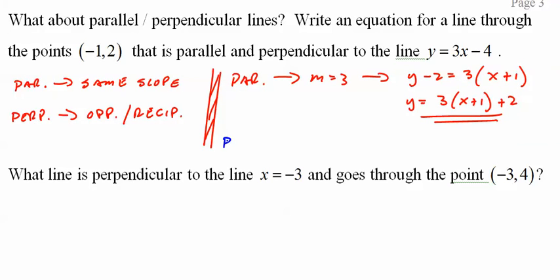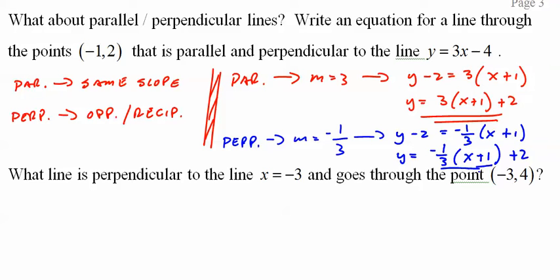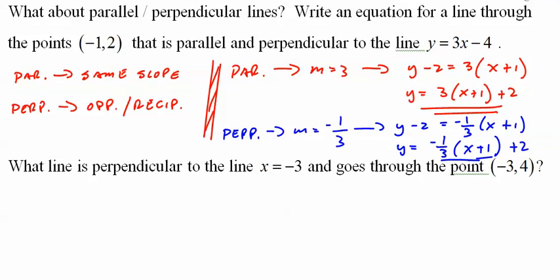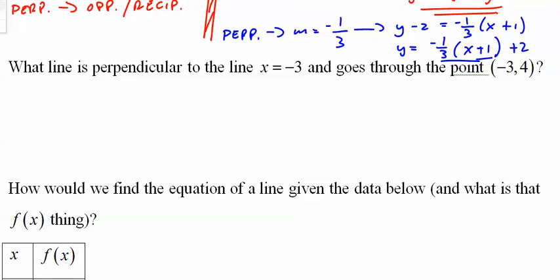And perpendicular: m equals negative 1/3. Y minus 2 equals negative 1/3 times x plus 1. Y equals negative 1/3 times x plus 1 plus 2. I see a lot of people instinctively turn that into slope-intercept. Unless it says slope-intercept, leave it. It's a lot easier to write things in point-slope.